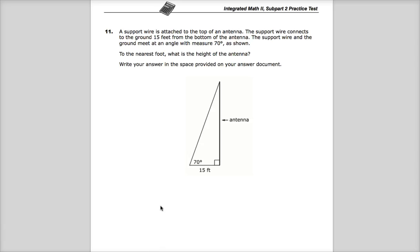A support wire is attached to the top of an antenna. The support wire connects to the ground 15 feet from the bottom. The support wire and the ground meet at an angle with a measure of 70 degrees as shown. They give you a nice picture and everything. To the nearest foot, what is the height of the antenna?